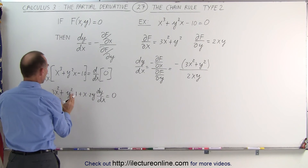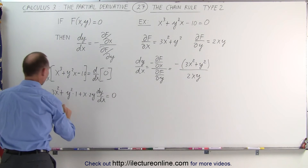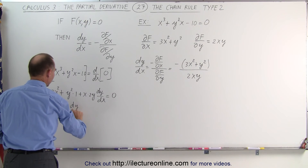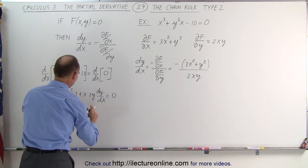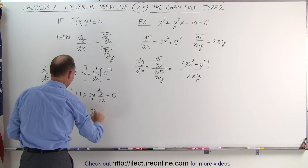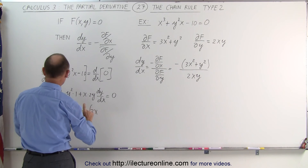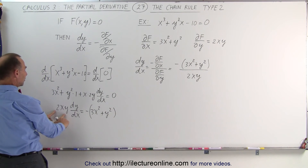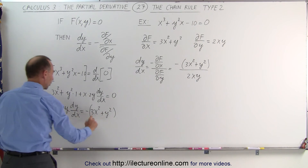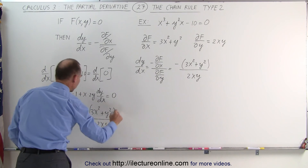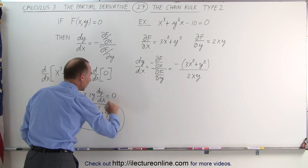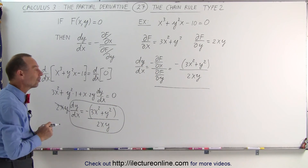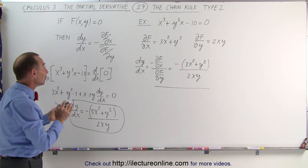Now we solve this equation for dy/dx. Moving terms, we get 2xy times dy/dx is equal to — moving 3x squared plus y squared to the right side — negative of the quantity 3x squared plus y squared. Dividing both sides by 2xy, we get the exact same result as before. That shows that this method does indeed work.